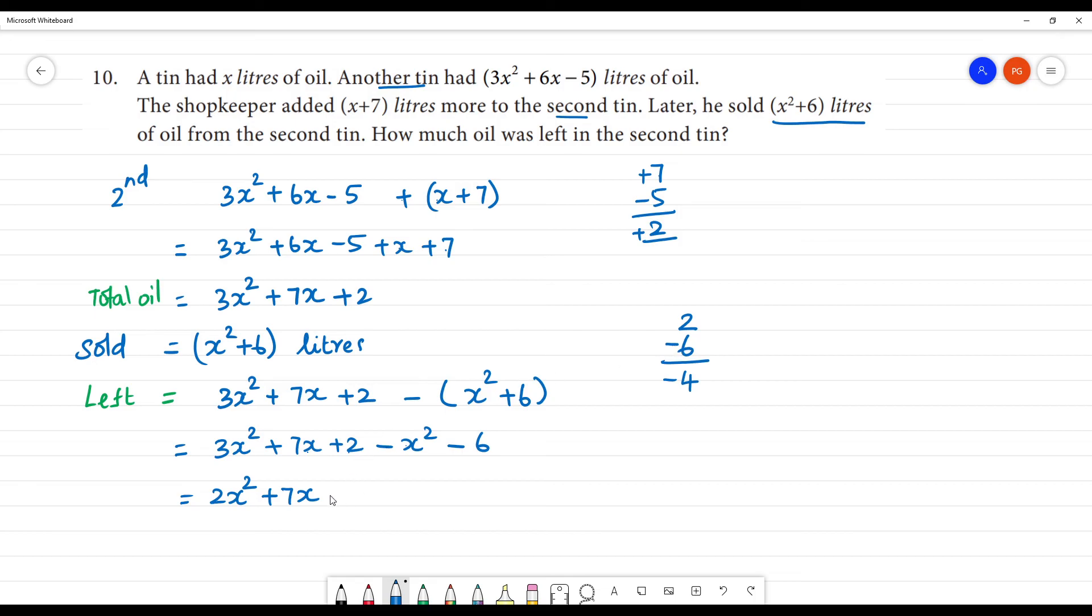6 minus 2 is 4. Greater number is negative sign. We call it minus 4. The answer is 2x² + 7x - 4. This is the left out oil in the second tin.